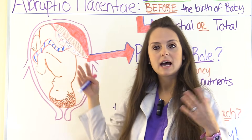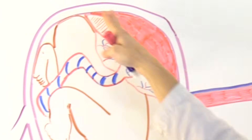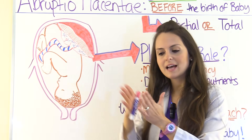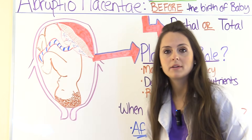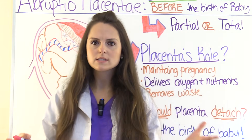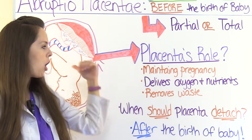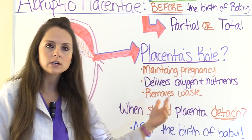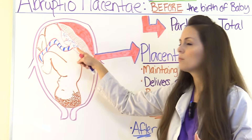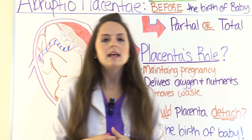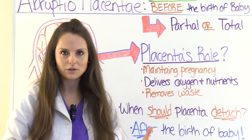Here we have a baby inside of its mom's uterus and the mom has experienced abruptio placenta. This placenta, which should normally be flush against the uterine wall, has come off of it. That's a problem because the placenta is very important for maintaining the pregnancy, delivering oxygen and nutrients to the baby, and removing waste via the umbilical cord.